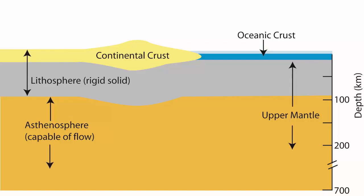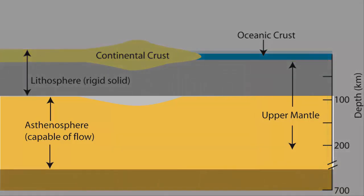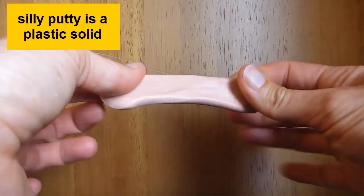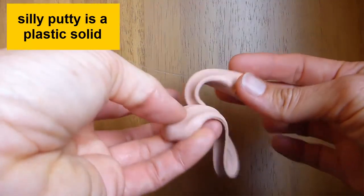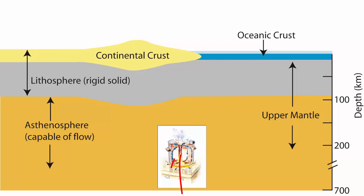The buoyancy and thickness of continental crust make it float high above the oceans, creating the continents. To understand how crust floats, we need to look more closely at the top of the mantle and how it interacts with the crust. Because of the water content of the mantle and the temperatures and pressures encountered in the zone between about 100 and 300 kilometers depth, the region there, called the asthenosphere, behaves like a plastic solid and is capable of flow over long periods of time. Hotter, less dense material rises, displacing colder, denser material which sinks.